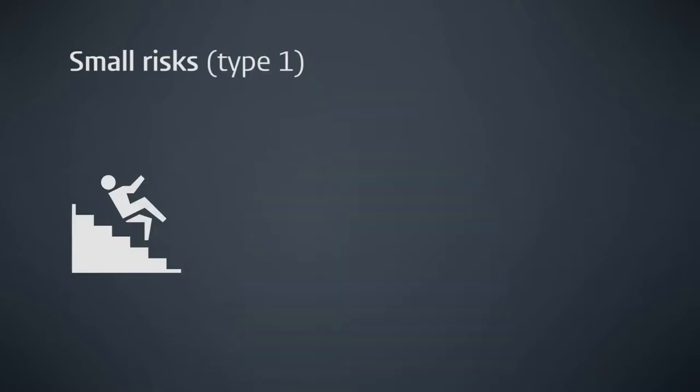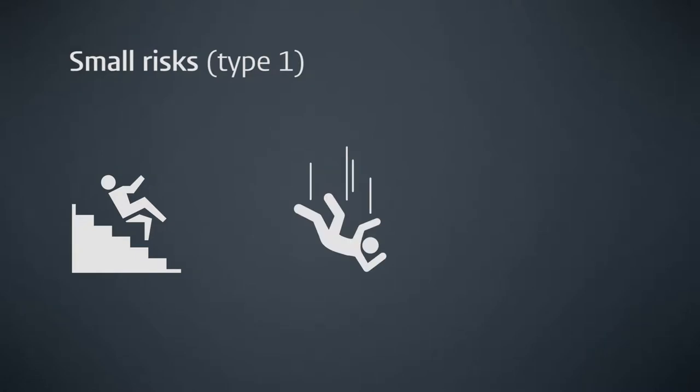Risks related to chemical industrial activities are diverse. On the one hand, there are the small risks such as falling from stairs, falling from height, tripping and slipping, and so on. As discussed in the introduction to this module, these risks are called type 1 risks and they can be found in every industrial sector. They can be treated in a similar way in every organization.